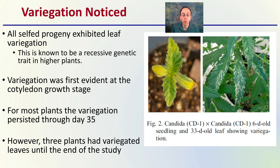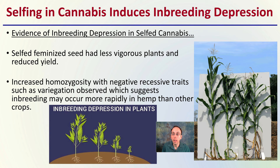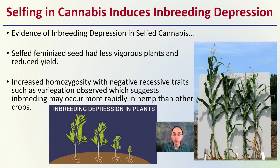Selfing cannabis induces inbreeding depression. Evidence includes: self-feminized seed produced less vigorous plants and reduced yield, and increased homozygosity with negative or recessive traits such as variegation was observed. This suggests inbreeding may occur more rapidly in hemp than in other crops. A corn plant example shown here illustrates reduced height from inbreeding depression, and this study indicates it may occur a little quicker in hemp crops.